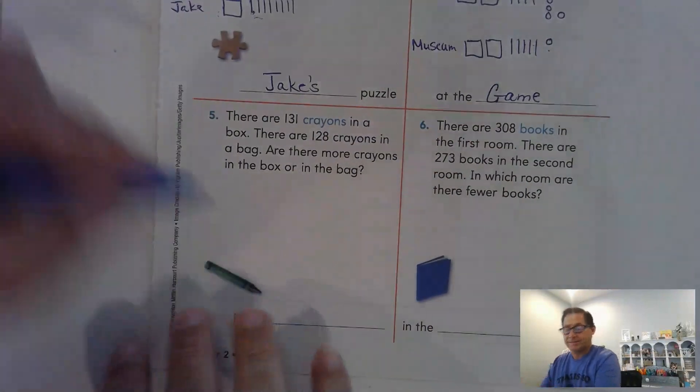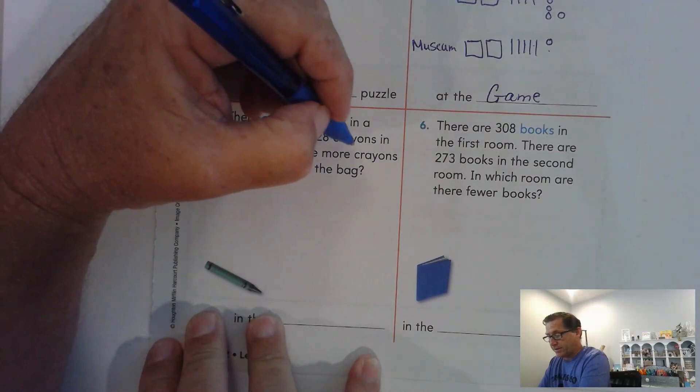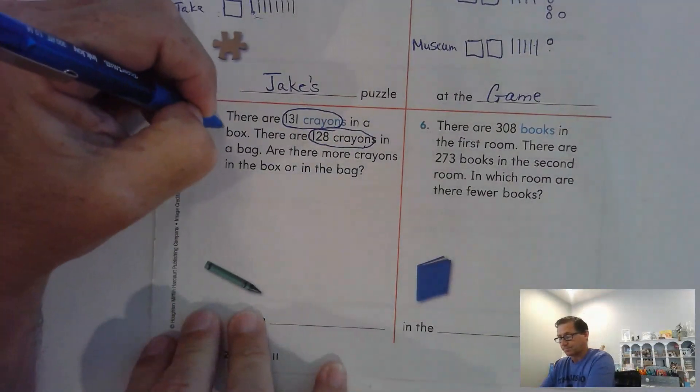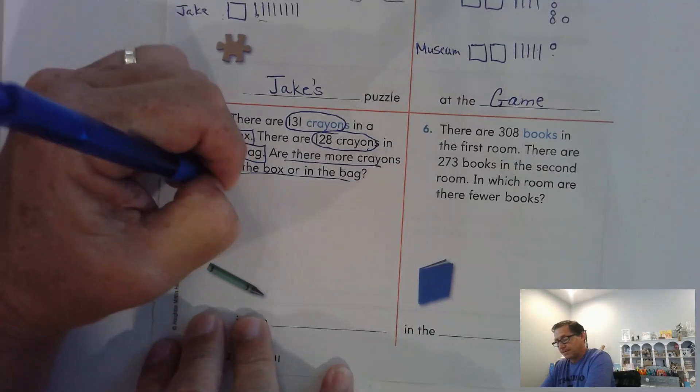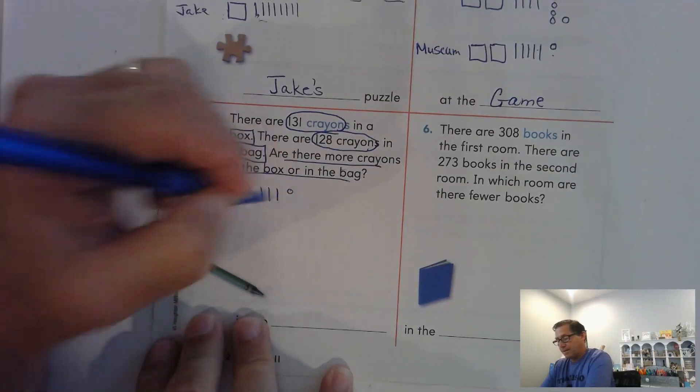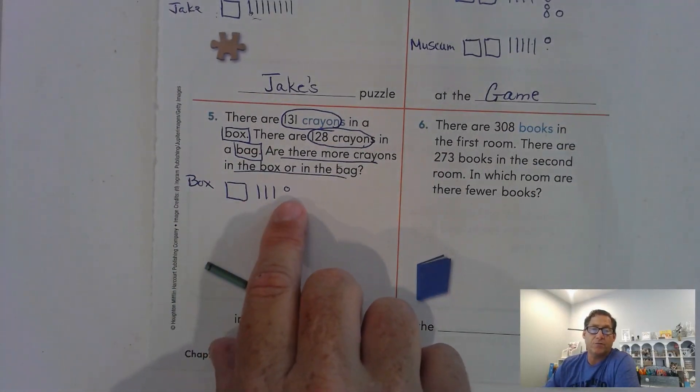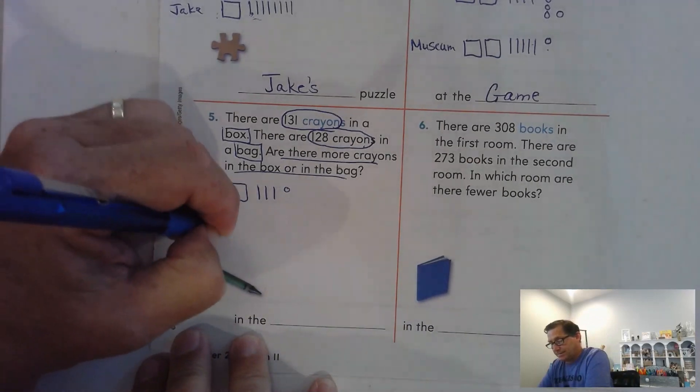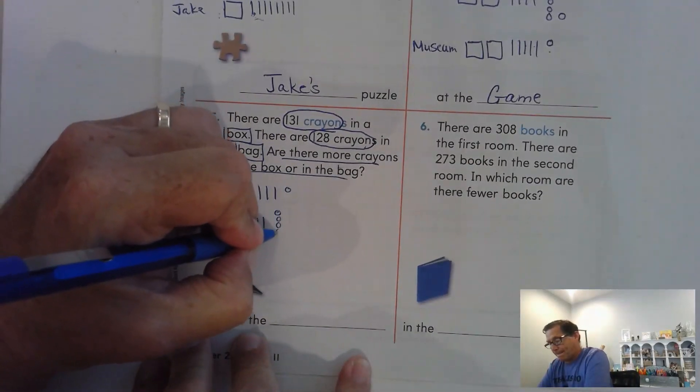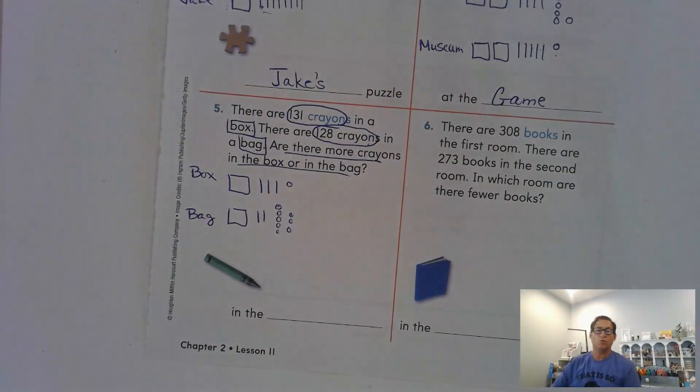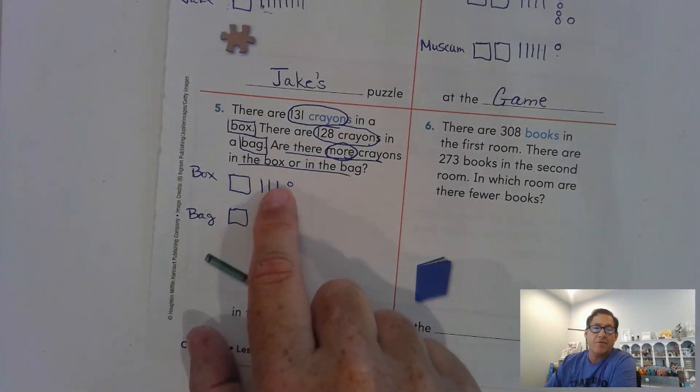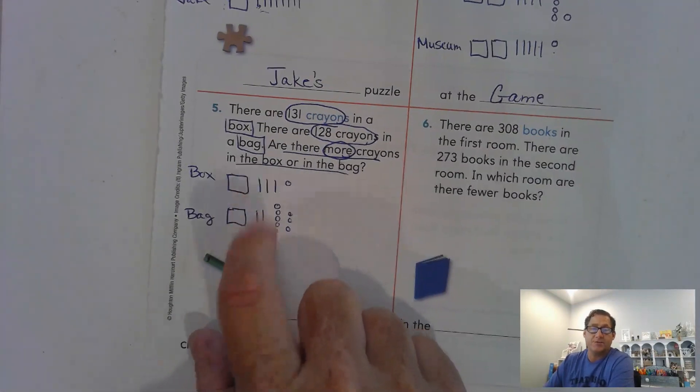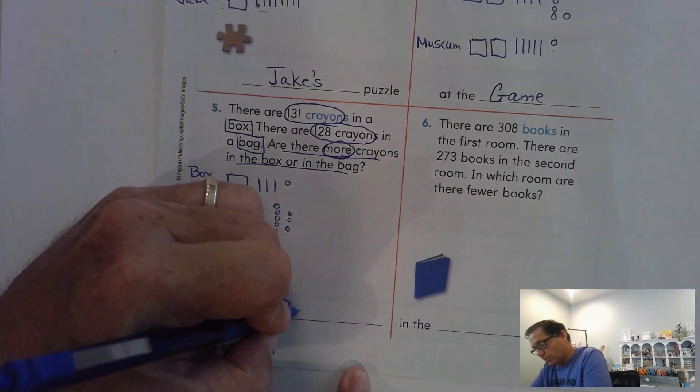Number five. There are 131 crayons in a box. There are 108 crayons in a bag. Are there more crayons in the box or in the bag? So a quick picture for the ones that are in a box, 131. Those in a bag. So which one is more? 100, 100. That doesn't help me. The greatest value in both numbers is the same. Three tens, two tens. So three is greater than two. So there's more crayons in the box.